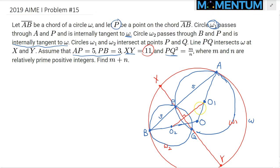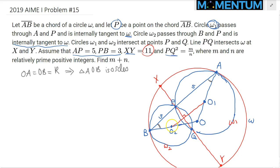One thing is clear: OA equals OB — they are both the radius of circle omega. That implies this angle is congruent to this angle over here — we have an isosceles triangle AOB. By the same token, connecting O2 to P, triangle BO2P is also isosceles, so that angle equals this one. Connecting O1 to P, this angle also equals that one. So we have four congruent angles.